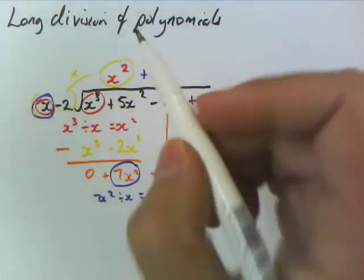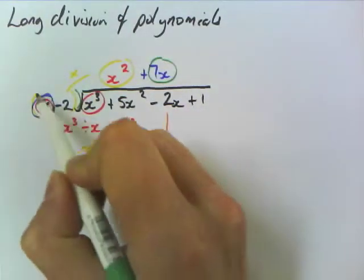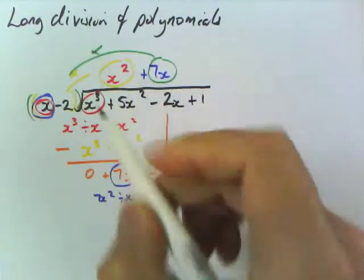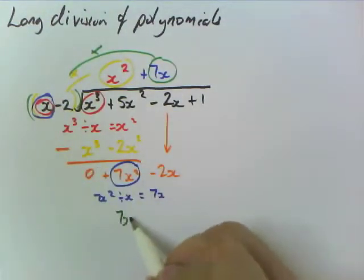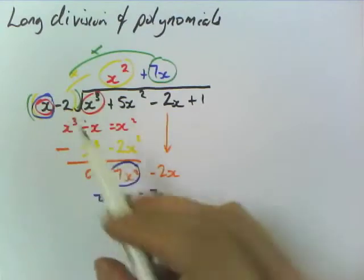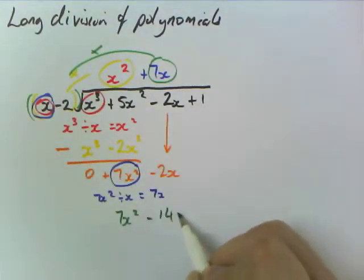And we repeat the process. So we're going to do this times by our bracket. And we're going to write that here, so 7x times x, 7x squared. 7x times minus 2 is minus 14x.